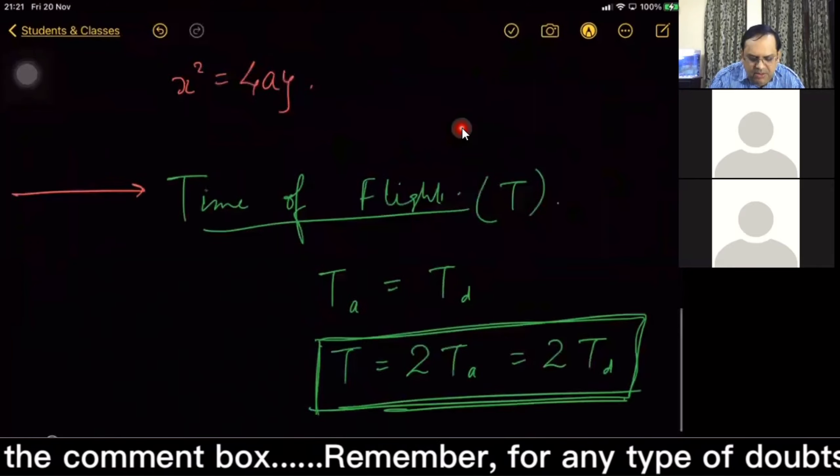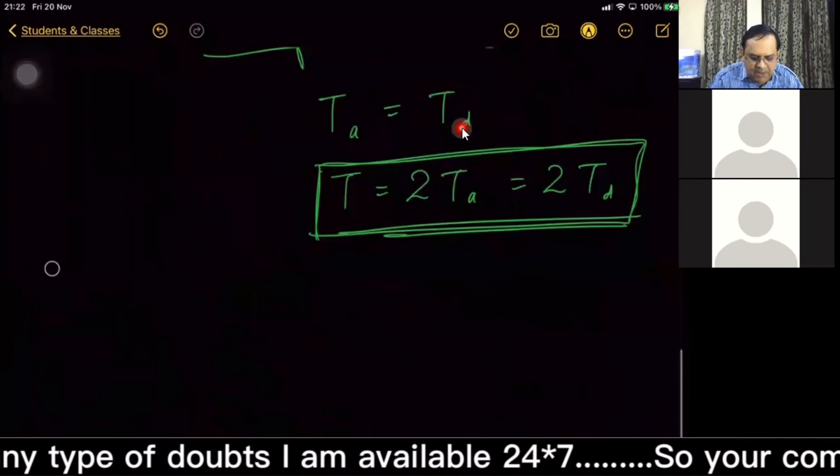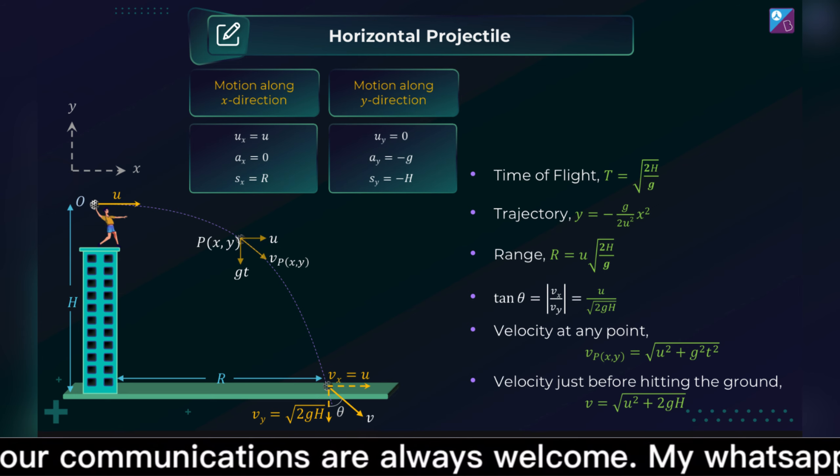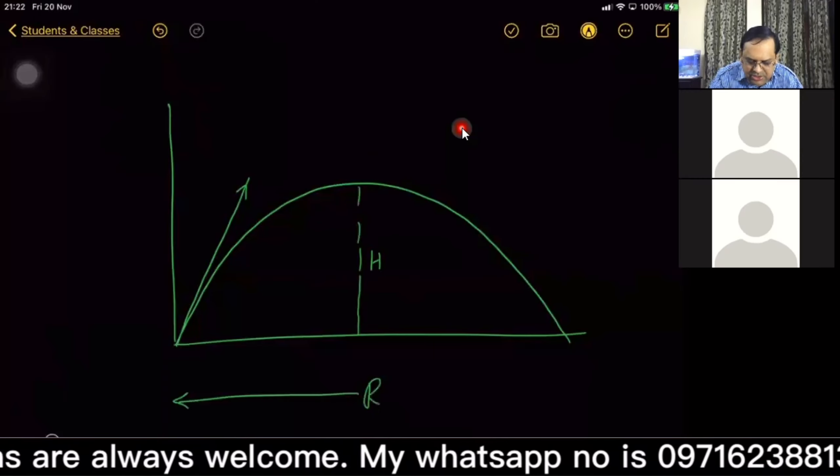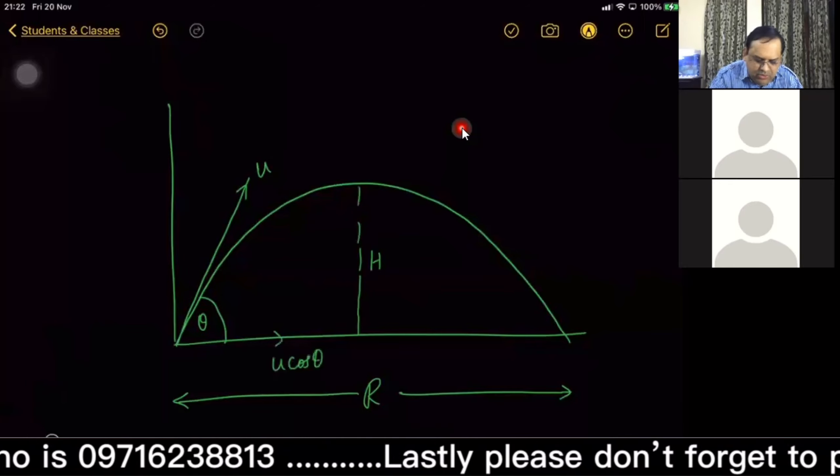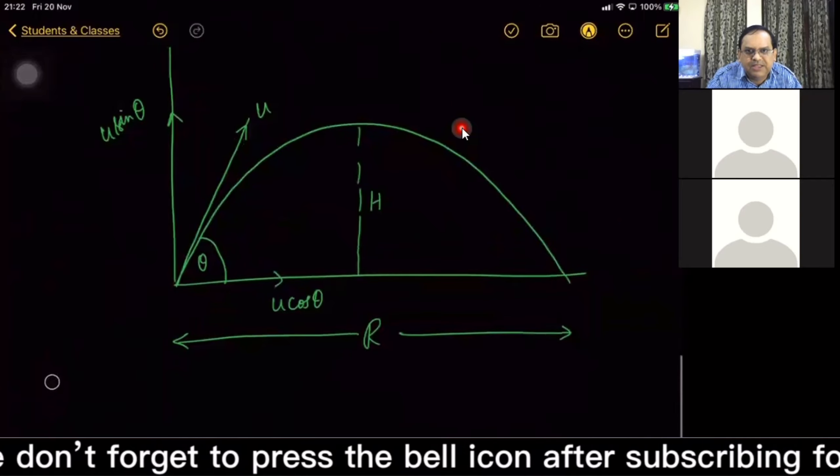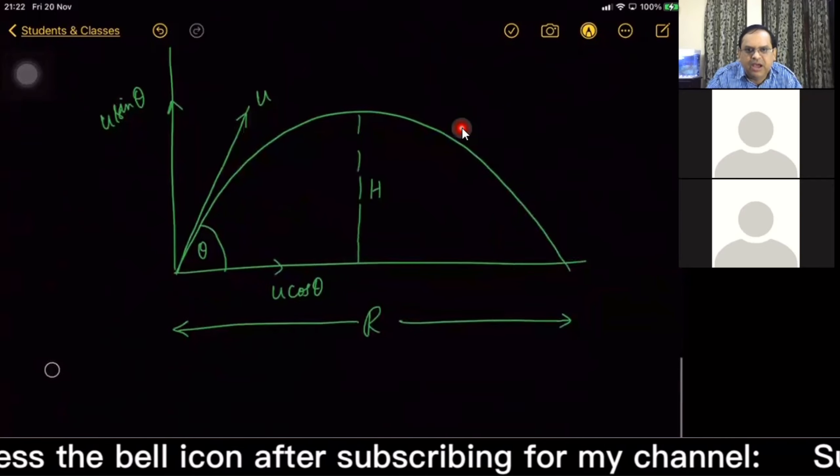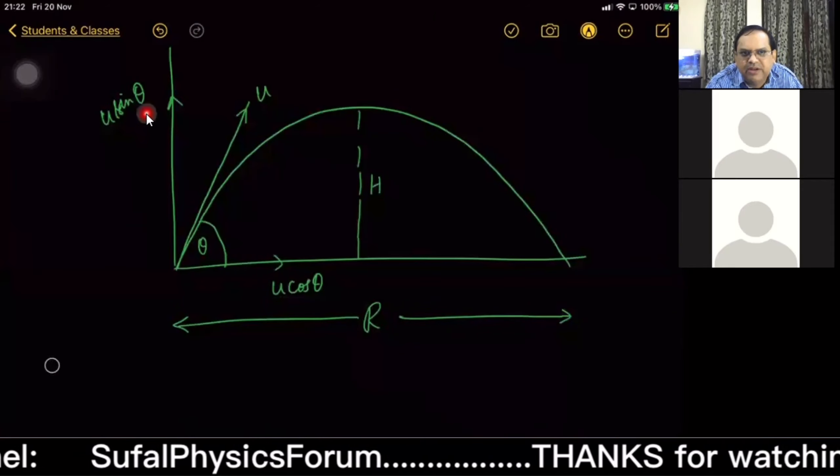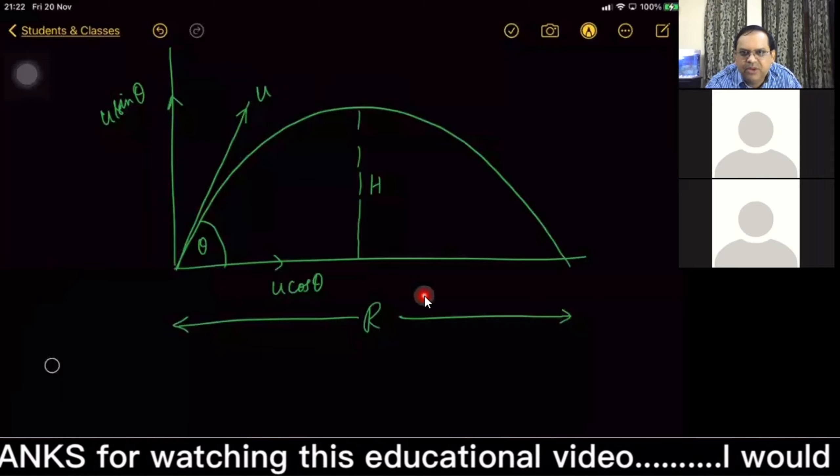This is h, this is R, u theta, u cos theta, u sin theta. Why is this horizontal component u cos theta, why not u sin theta? These things are very basic, all three of you must be knowing. Yes sir, these are very basic.